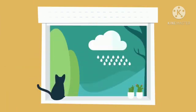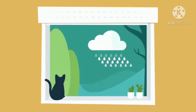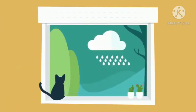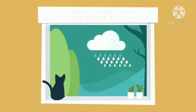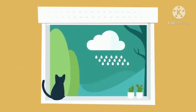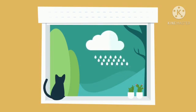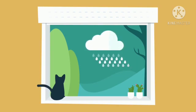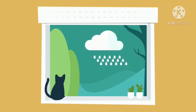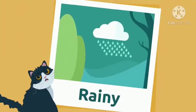What do you see through the window? The rain! When there are clouds, droplets fall down and we say it's raining — rainy.